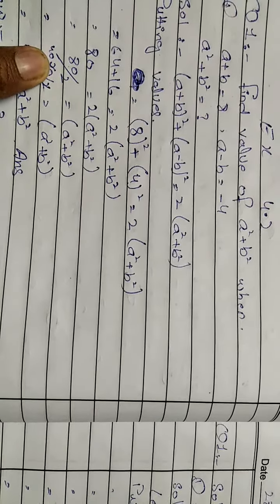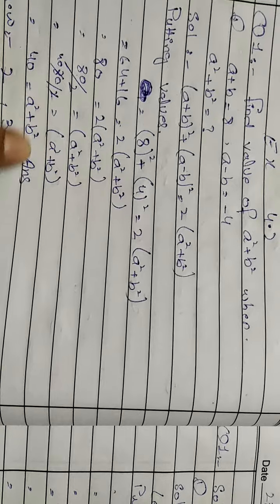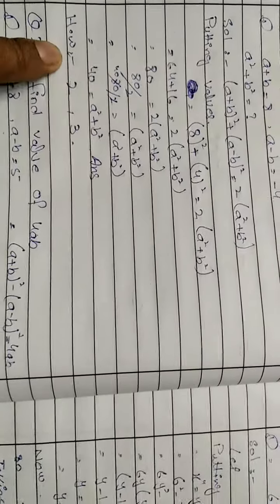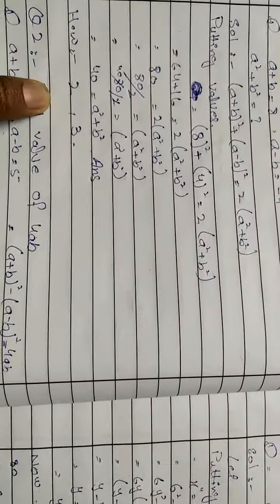So a² + b² equals 40. This is the answer. Now homework is question number 2 and 3. Question number 2: Find the value of 4ab when a + b = 8 and a - b = 5.